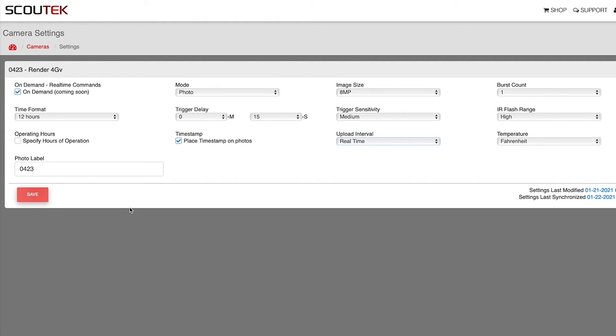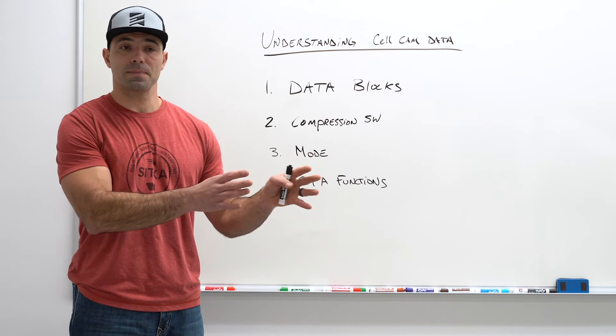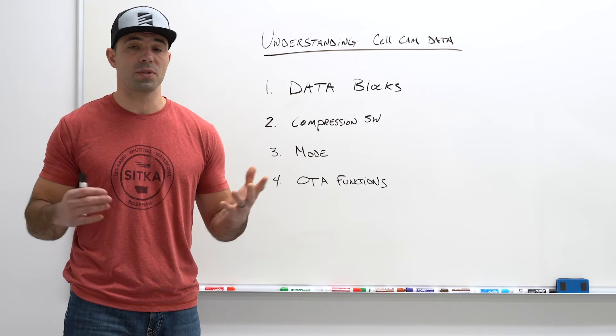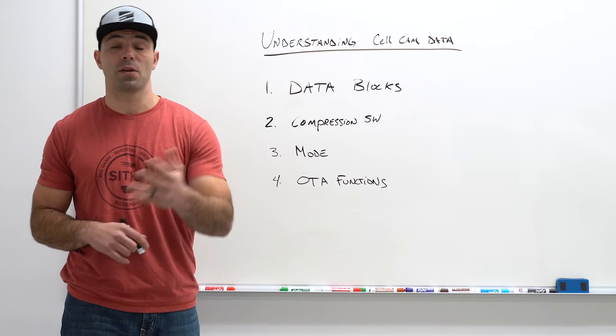Anything you want to do from your phone and have that take place and update on your camera is considered over the air or an OTA function. That could also include updating your firmware or a command to format your SD card.